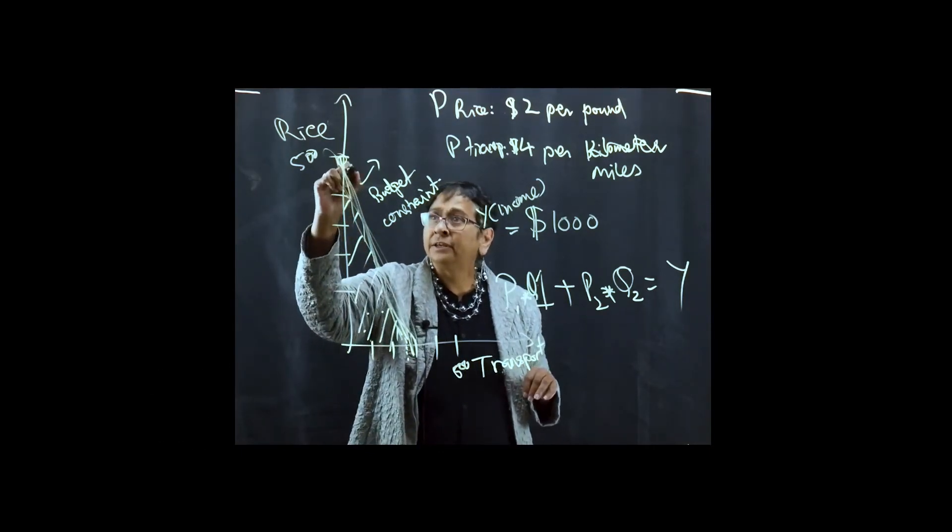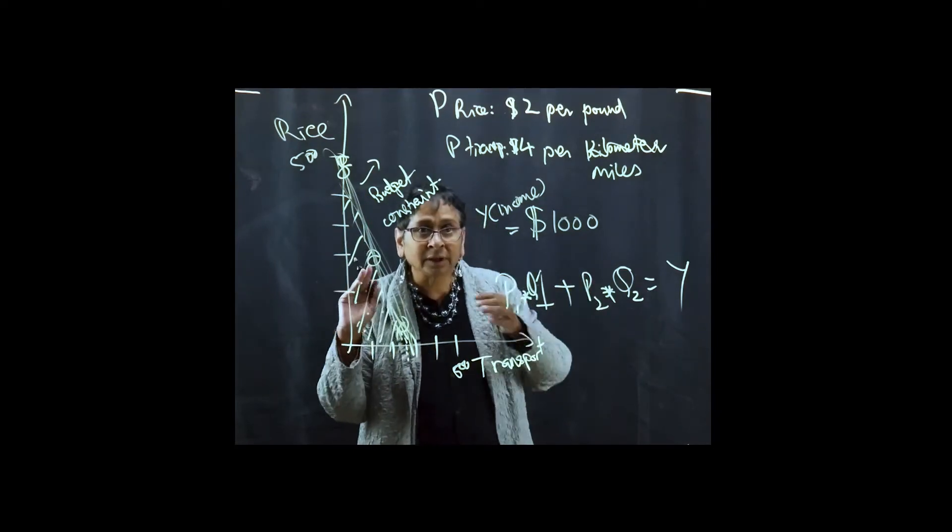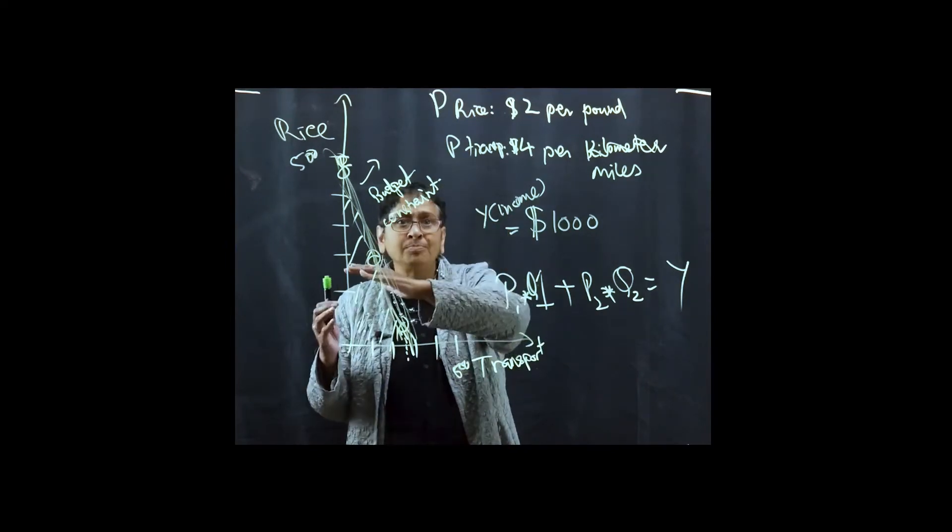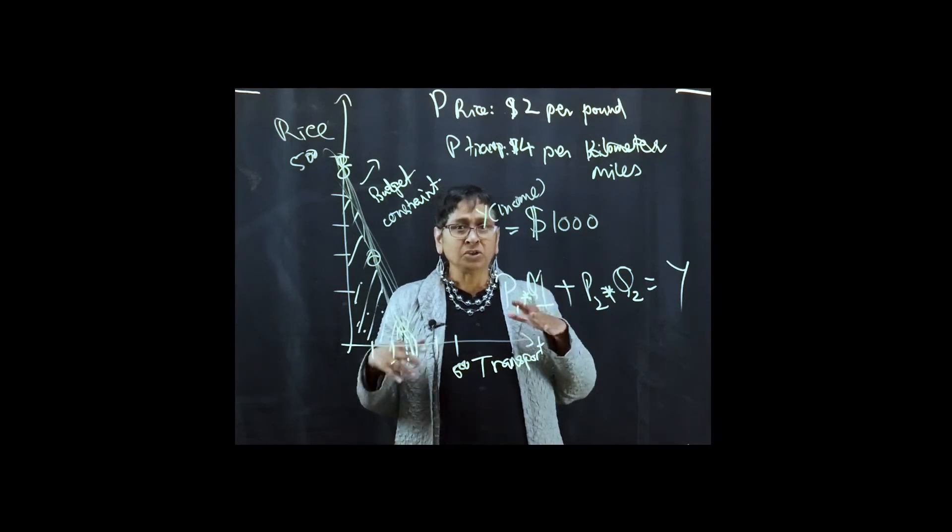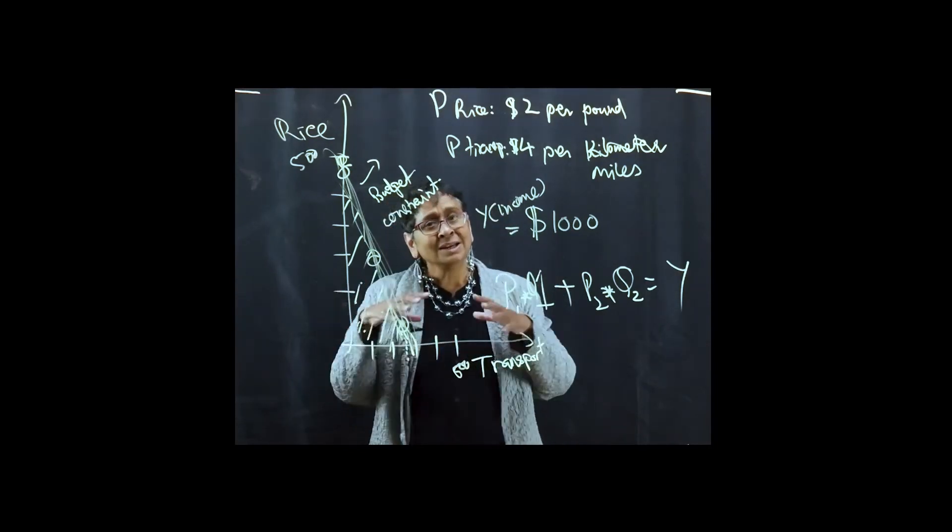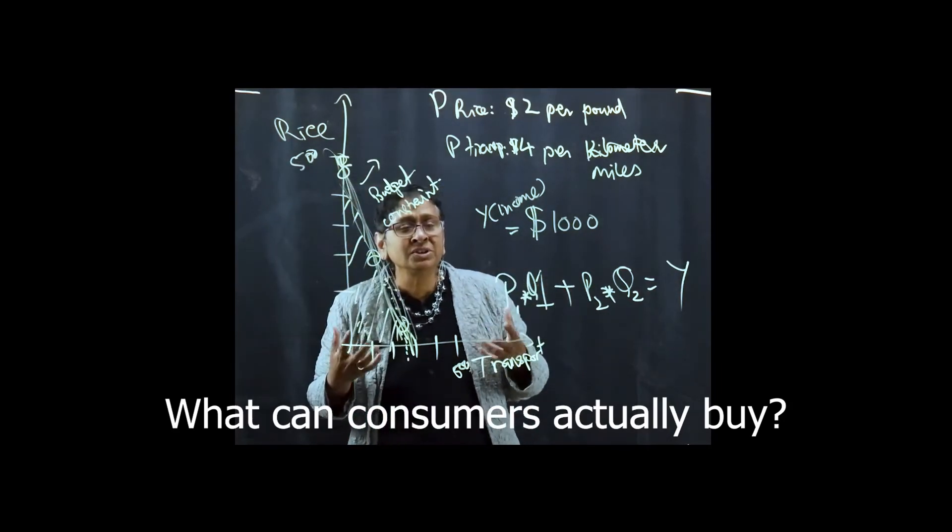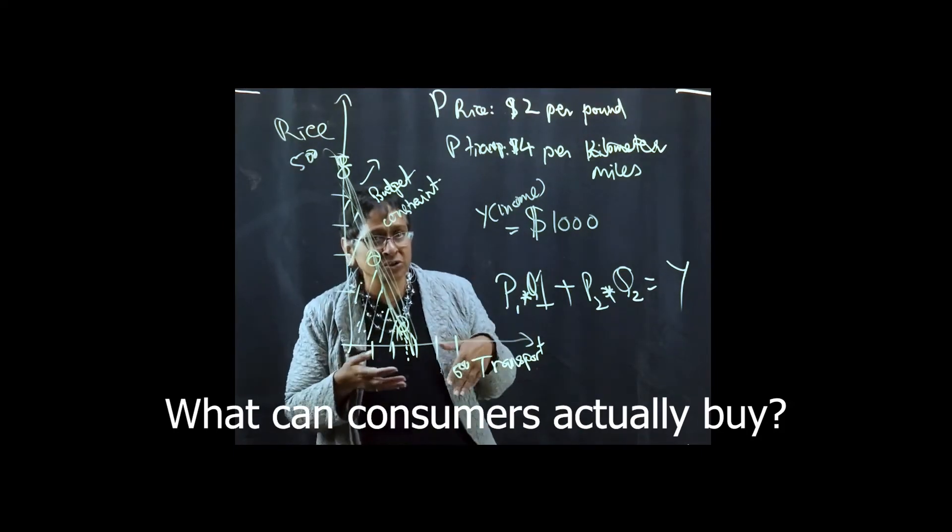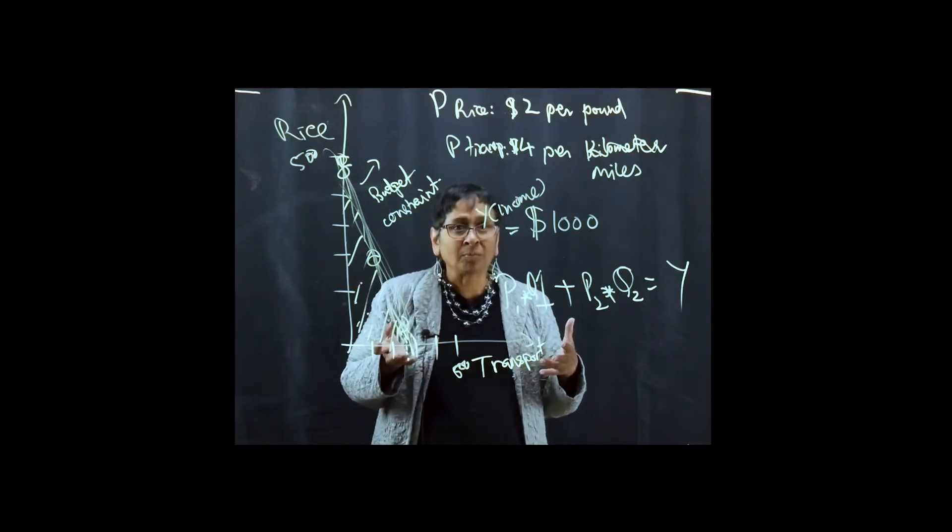It can be here, it can be here, it can be anywhere, but it can't be past the budget constraint. So the first thing we're beginning to map out in our decision making by consumers is what is the basket of goods the consumers can actually buy, given their income, their budget constraint. This then is the available options.